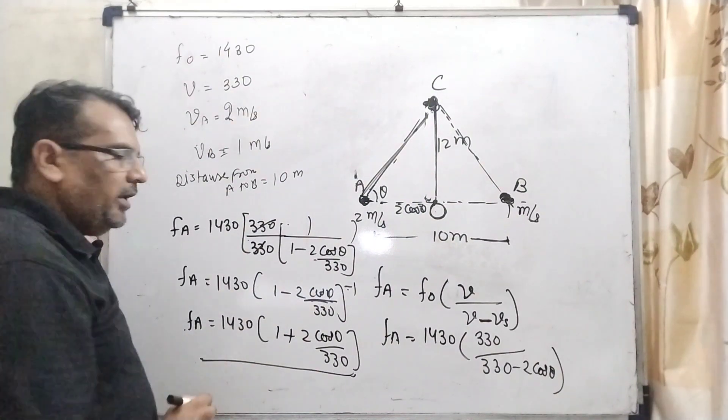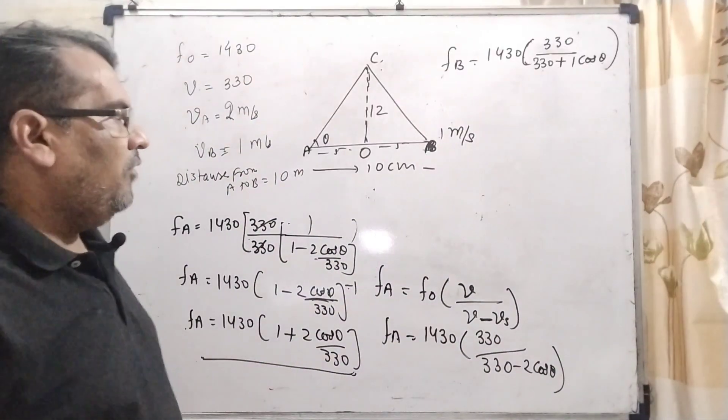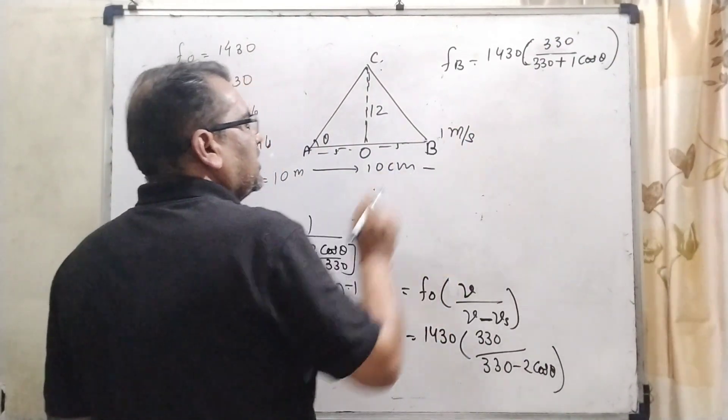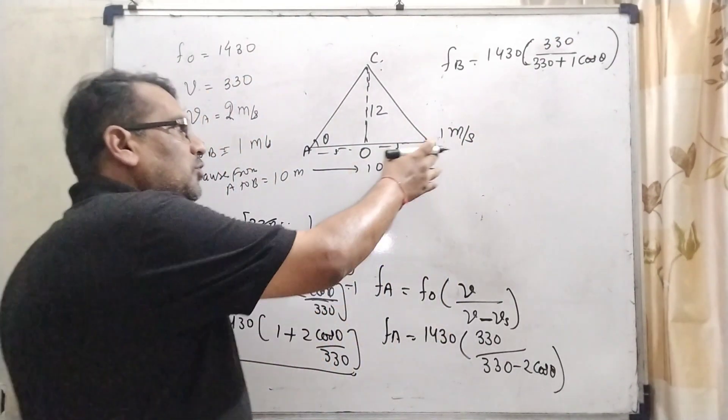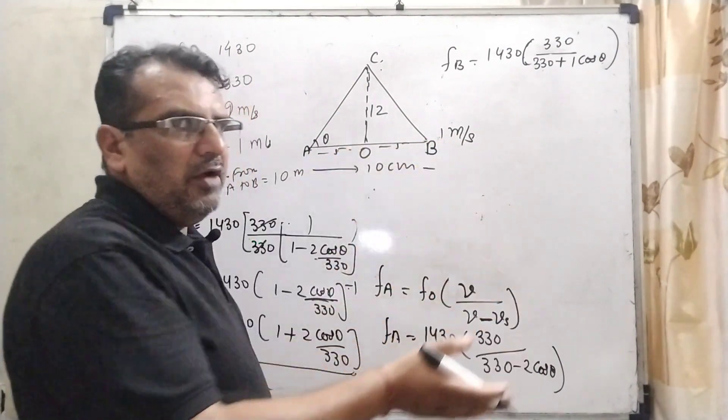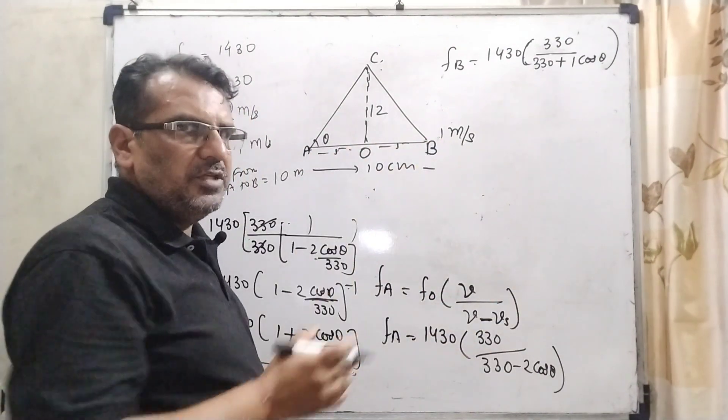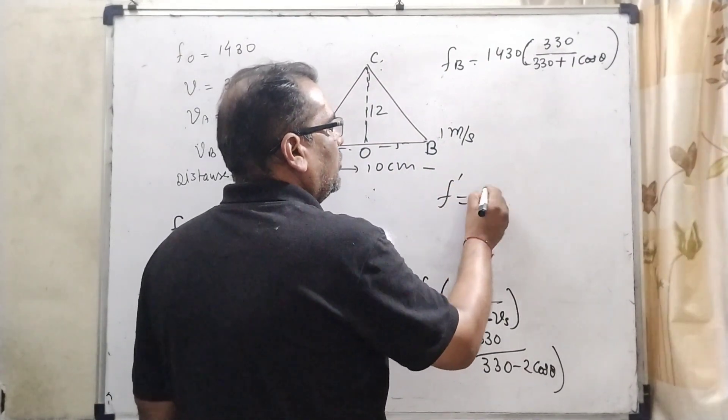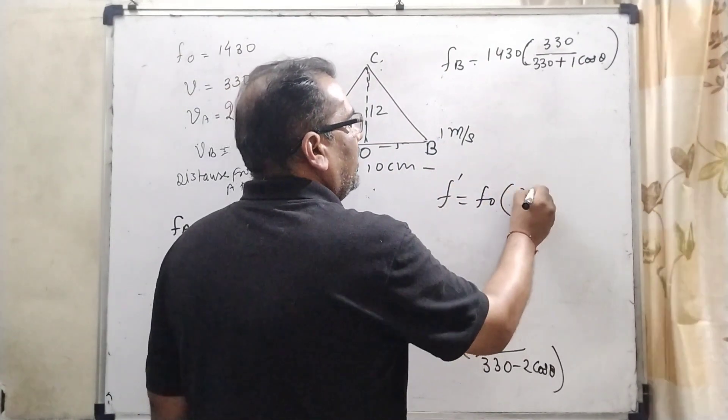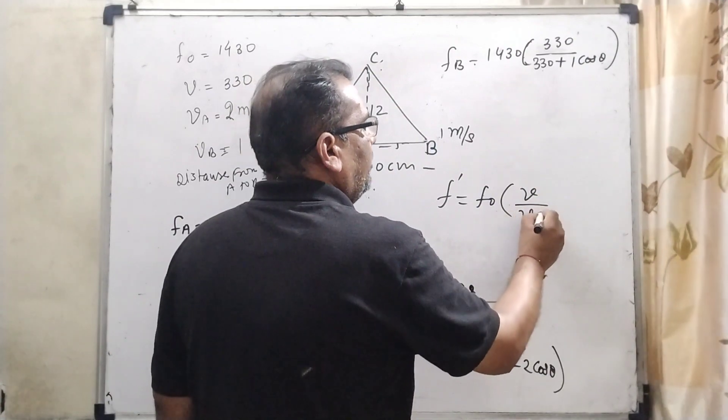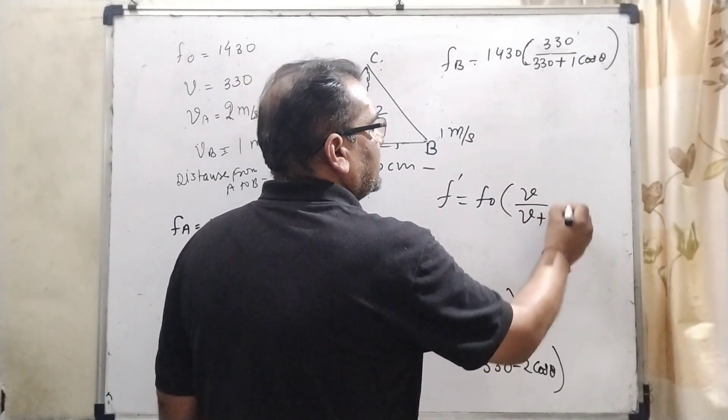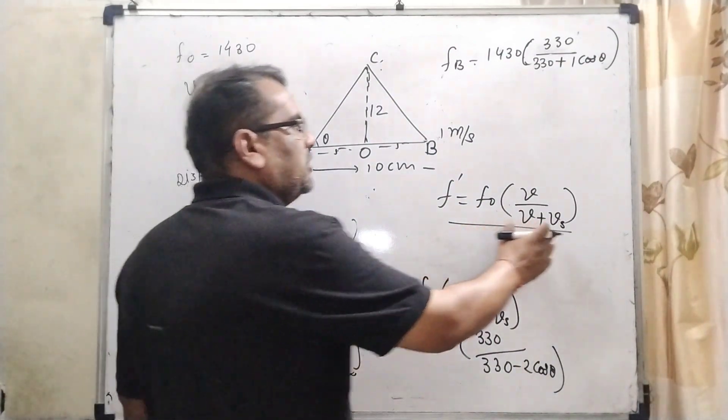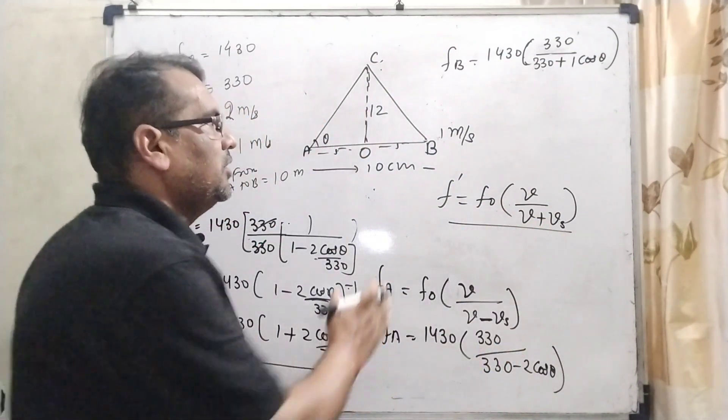Similarly, we have to find out f_B. Now, this first man which has speed 1 meter per second means source of the sound is moving away from the listener or observer. Then we know that we are using the formula f' = f₀ × V / (V + Vₛ).